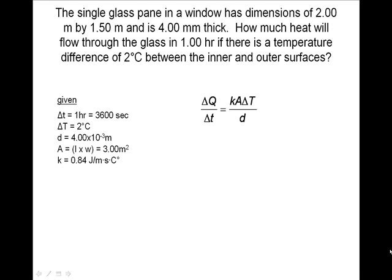Here is the equation to find the amount of heat transferred through the glass. We want to isolate the heat, so we multiply both sides by the time interval.